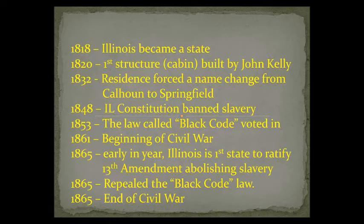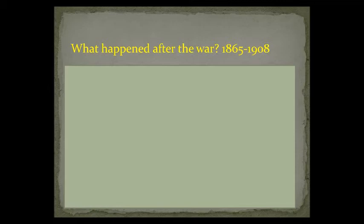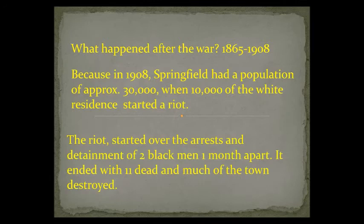Four years later is how long it lasted. And in four years, Illinois is the first state to ratify the 13th Amendment abolishing slavery. Also in 1865, they repealed the Black Code law, and that also was the end of the Civil War. My question always has been, what happened after the war? That time period from 1865 to 1908 — you only see blurbs that say things in Springfield were prospering and things were doing well. People got used to the war being over and slavery was abolished. But what happened?